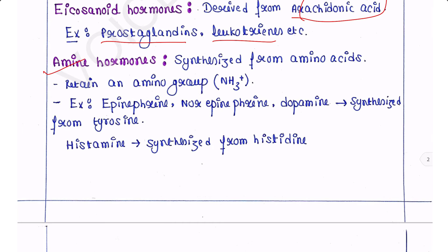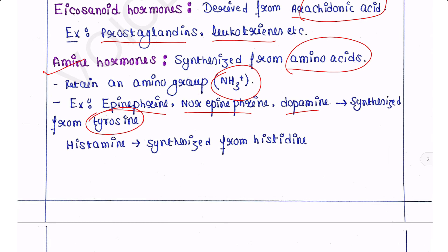Amine hormones are synthesized from amino acids. They are called amines because they retain an amino group NH3 positive. Examples are epinephrine, norepinephrine, and dopamine. They are synthesized from the amino acid histidine.